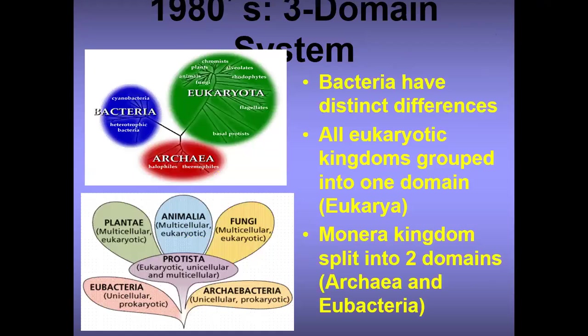In the 1980s, we have the three domain system. Bacteria have distinct differences, and all eukaryotic kingdoms were grouped into one domain. The Monera kingdom was split into two domains: Archaea and Eubacteria. So now we have the domains Bacteria, Archaea, and Eukaryota, with kingdoms including Eubacteria, Archaebacteria, Protista, Fungi, Animalia, and Plantae.